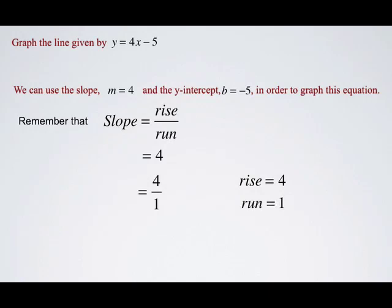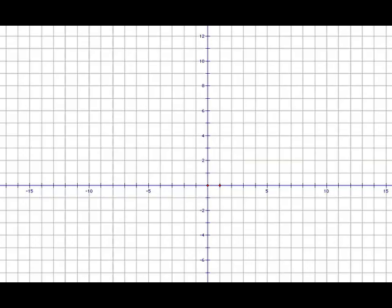I'm going to open up Geometer's Sketchpad again to show you how this is graphed. In Geometer's Sketchpad, I'm going to create a point at my y-intercept, which was negative 5.